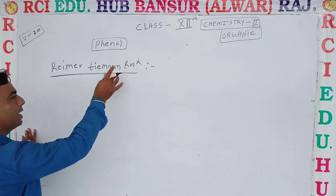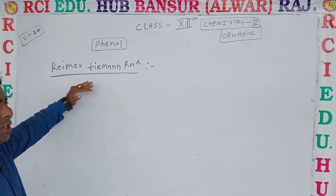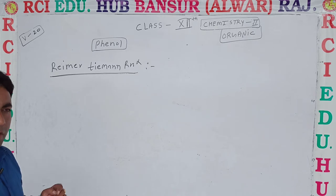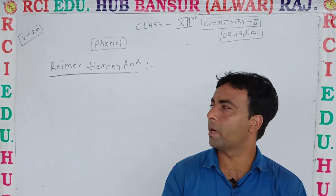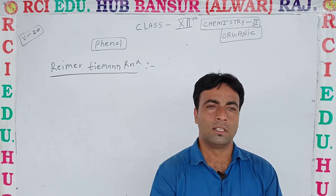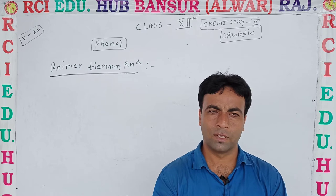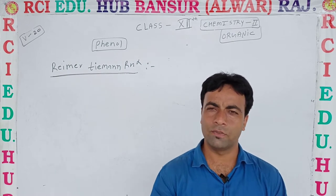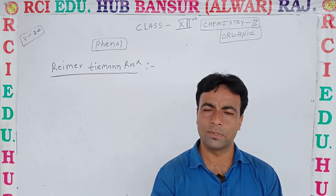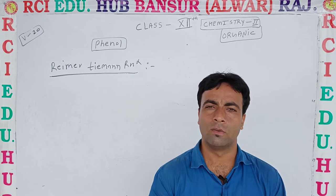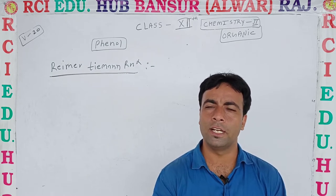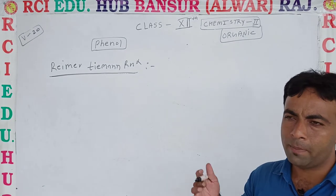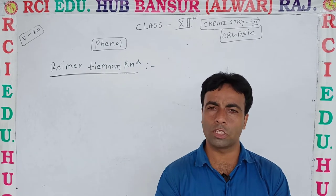In the Reimer-Tiemann reaction, phenol reacts with chloroform in basic medium and forms benzaldehyde, which is a very important product. This product formation takes place via an intermediate — that is carbene, CCl2. Carbene can attack at the ortho position or the para position of phenol, so there are two possibilities of product formation.